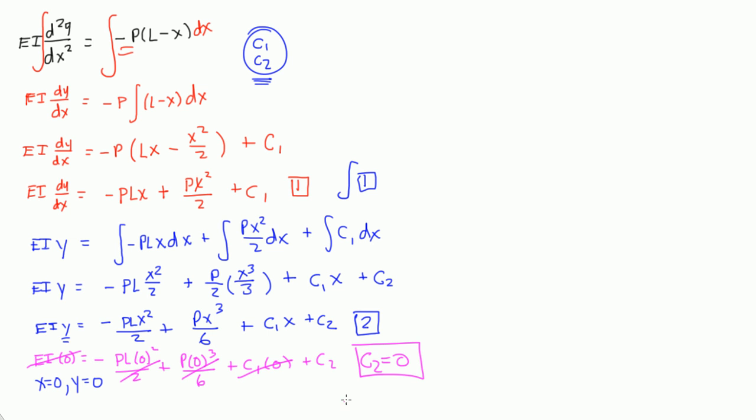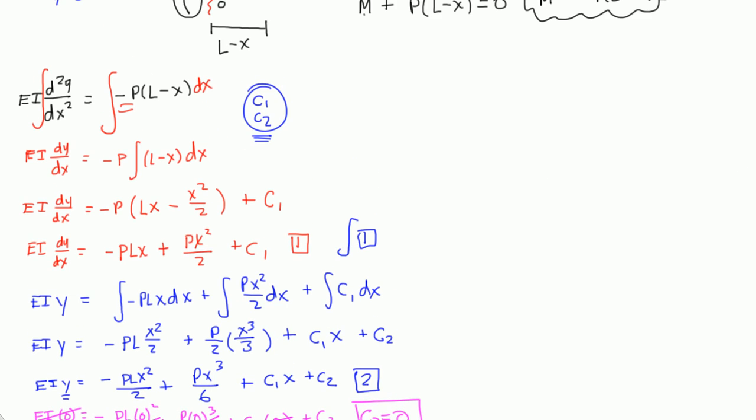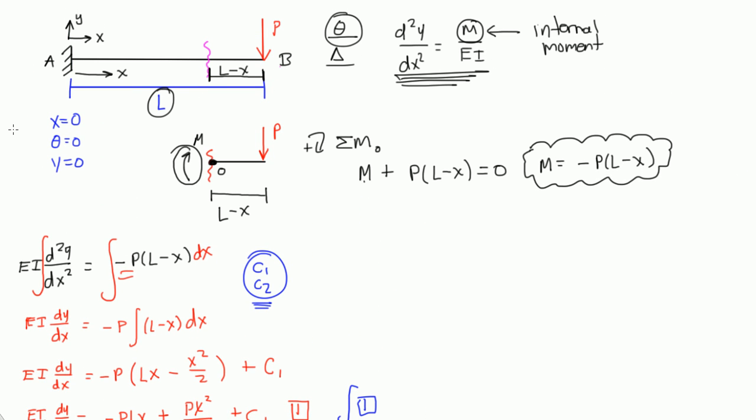That means C2 is equal to 0. There is one of our constants. C2 is equal to 0. Now, we also said that at x equals 0, the slope is equal to 0, the slope of the deflected shape. And if I drew the deflected shape, it would look something... let me redraw that a little bit better.